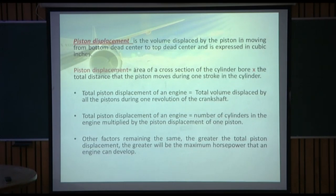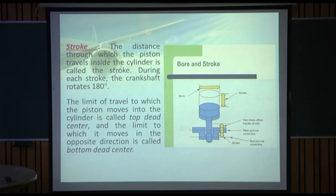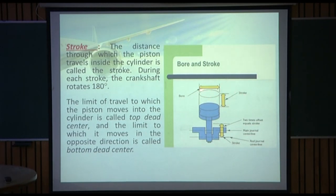The total piston displacement of an engine is the total volume displaced by all pistons during one revolution of the crankshaft — that is, the number of cylinders multiplied by the piston displacement of one piston. All other factors remaining the same, the greater the total piston displacement, the greater the maximum horsepower that an engine can develop. In the diagram, you can see the stroke (distance between TDC and BDC) and the bore (the diameter of the cylinder).